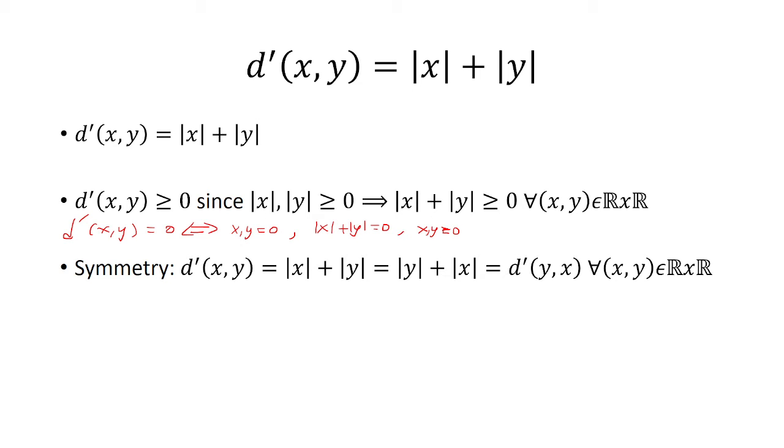The second one is we have to test for symmetry. So if we look at d' of x, y, that's just absolute value of x plus absolute value of y. And because addition is commutative, I can switch the x and the y and write it as absolute value of y plus absolute value of x. Which, in this order, y comes first, x comes second. And so that's why I have d' of y comma x.